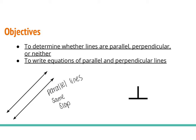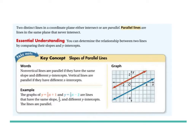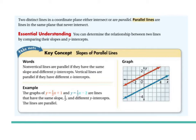Now perpendicular lines look like this — and what's unique about perpendicular lines is that they create a 90-degree angle at their intersection point. That little box represents 90 degrees. What's interesting about perpendicular lines is that their slopes are opposite reciprocals. Two distinct lines in a coordinate plane either intersect or are parallel. Parallel lines are lines in the same plane that never intersect — it's because they're going in the same direction.